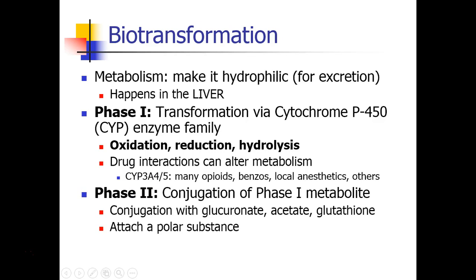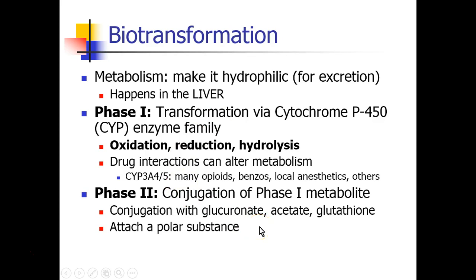Phase II reactions usually involve conjugation, or adding something onto the metabolite from the Phase I reaction. We can add lots of different substances like glucuronate, acetate, or glutathione. These are also hydrophilic molecular groups which are polar and so they work towards the final goal of making drugs more and more hydrophilic so they can be excreted in the urine. Phase II reactions are usually not carried out by the cytochrome P450 enzyme family.